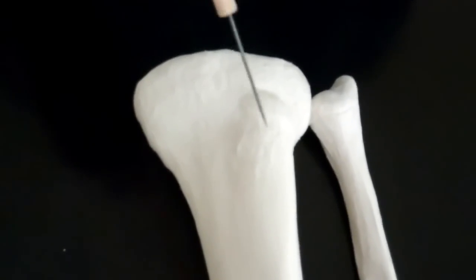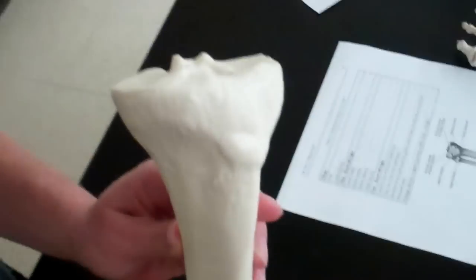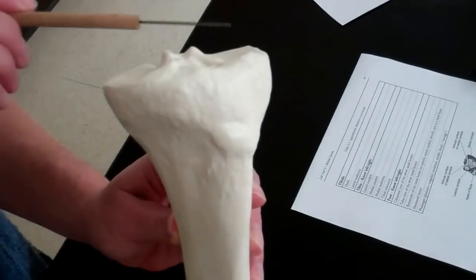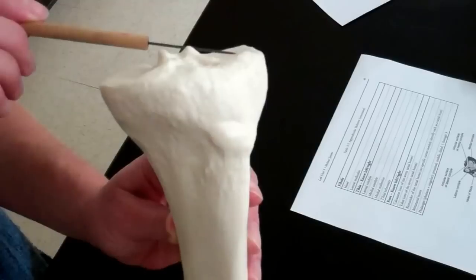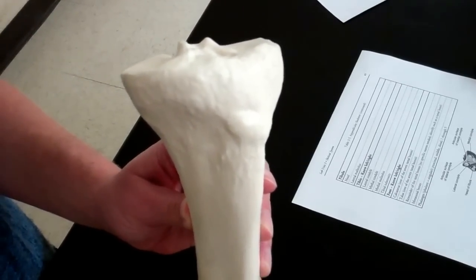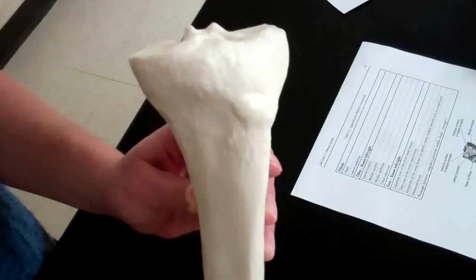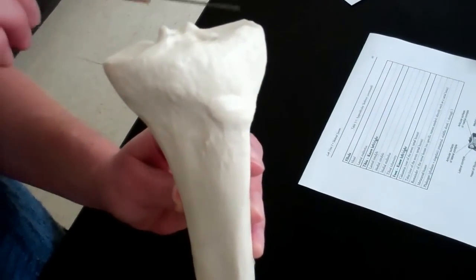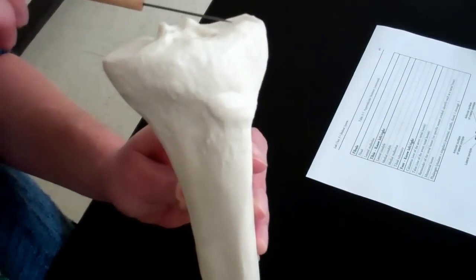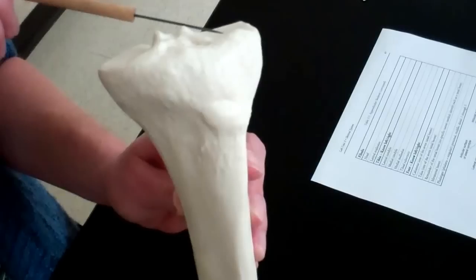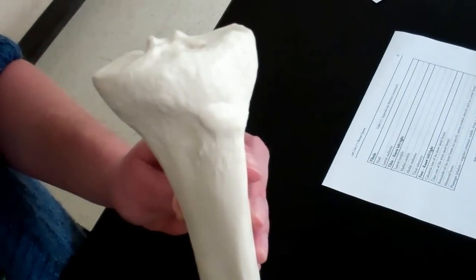If we rotate the tibia, we can see the articulating surface where the tibia touches the femur. There's the medial condyle, which is along the side of the medial malleolus, and the lateral condyle on the other side. These touch the two condyles on our femur. Let's take a peek at that joint.